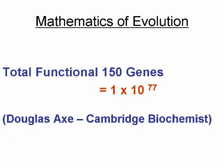This was demonstrated by Douglas Sachs, a renowned Cambridge biochemist. This would mean therefore that for every 1 × 10^77 mutations, a potential functional 150 amino acid protein could be formed, which could then undergo natural selection.